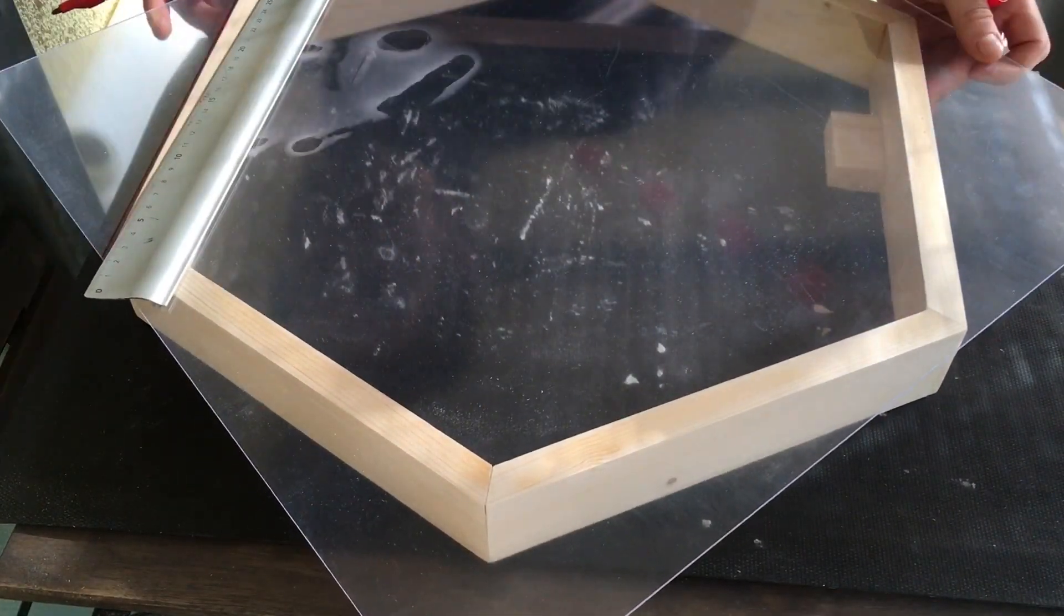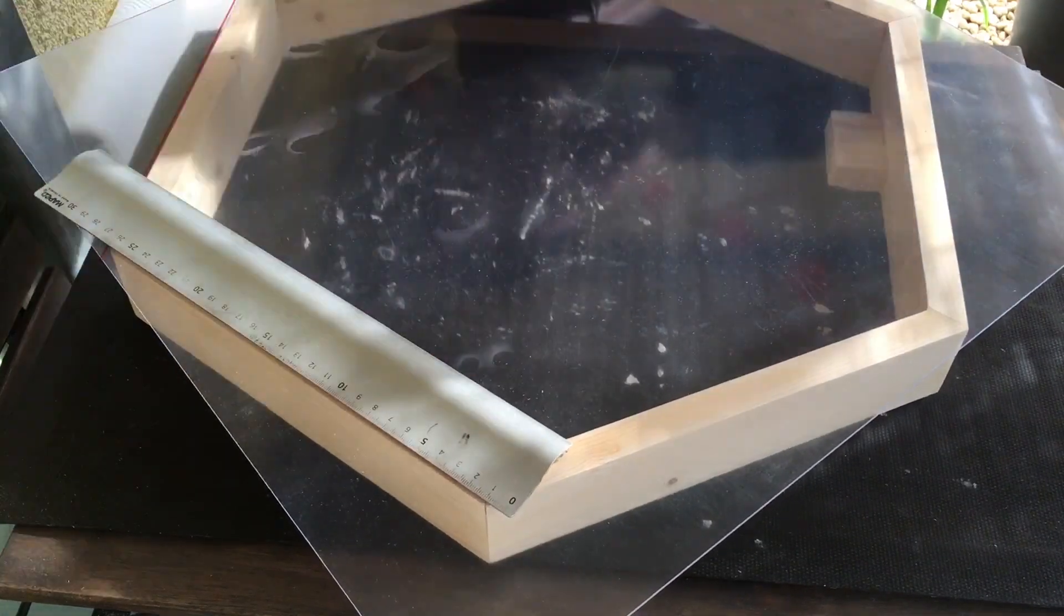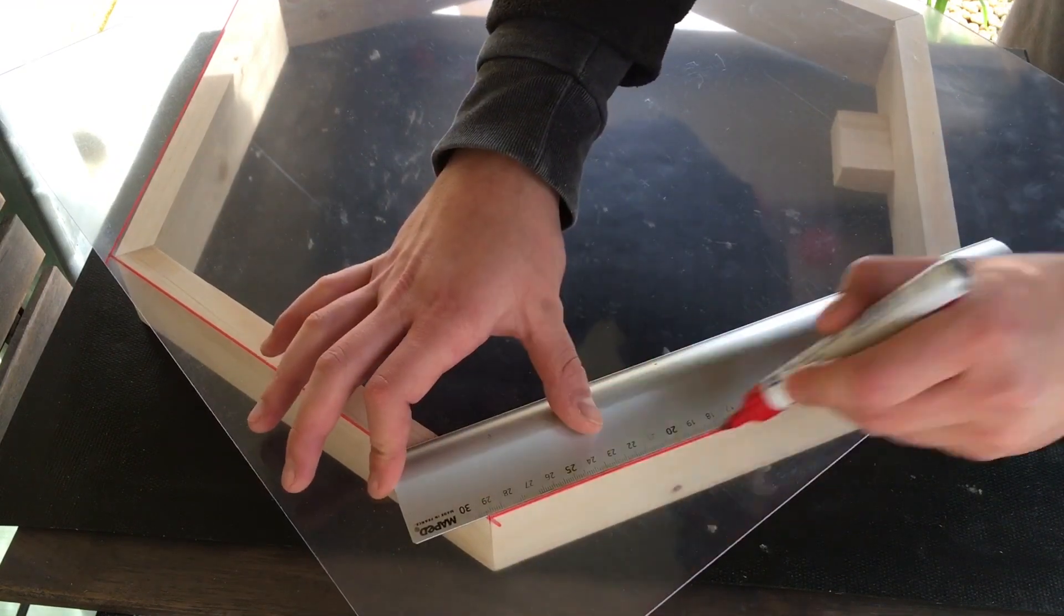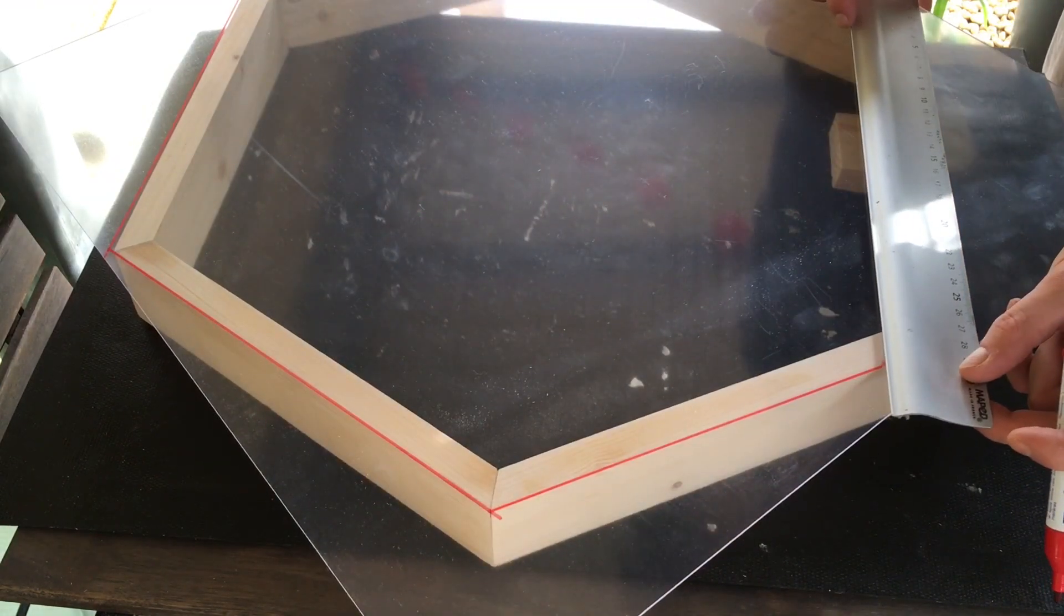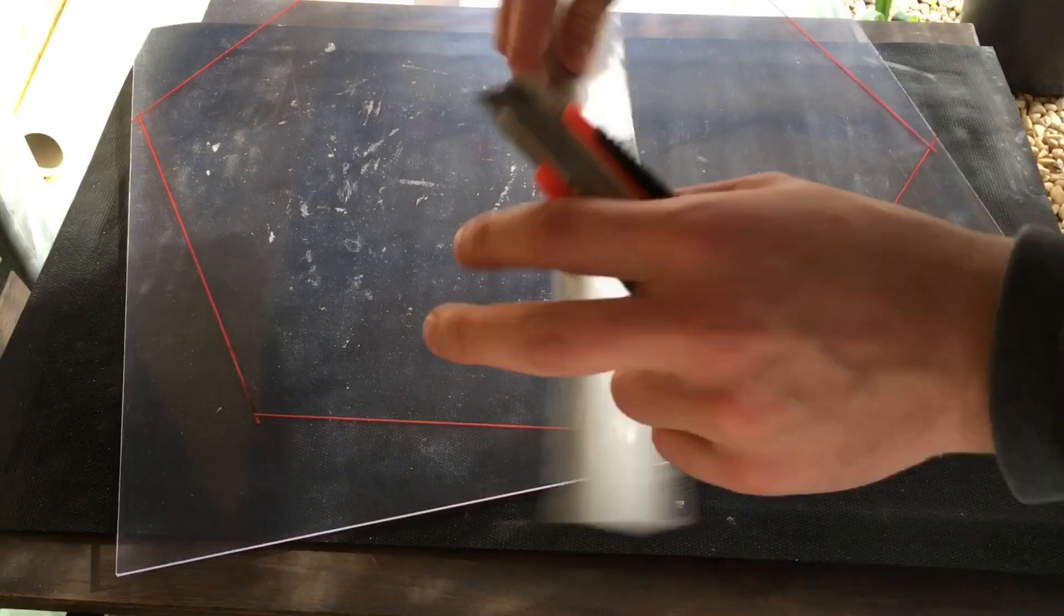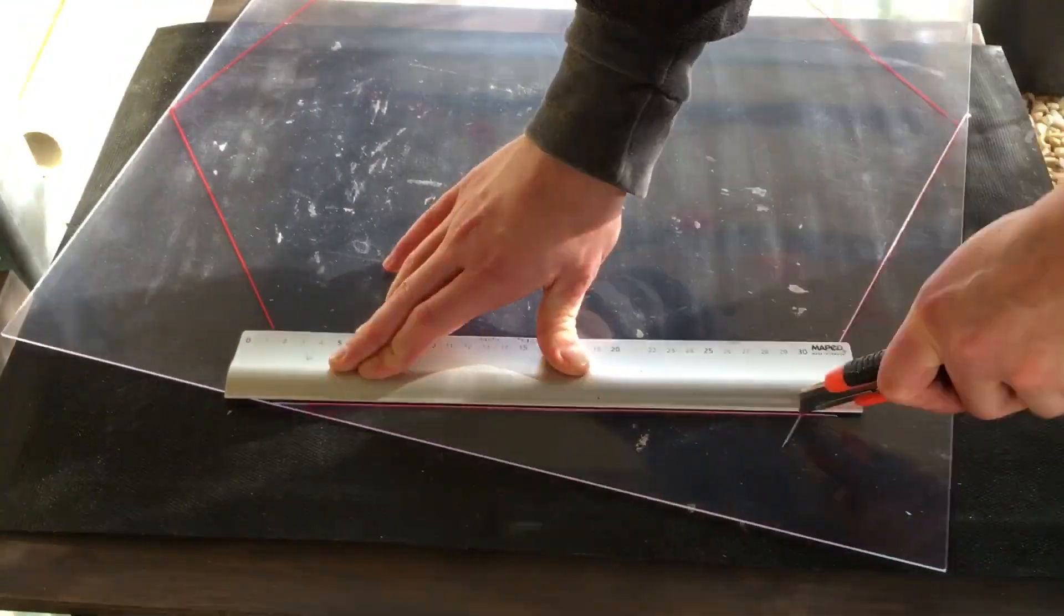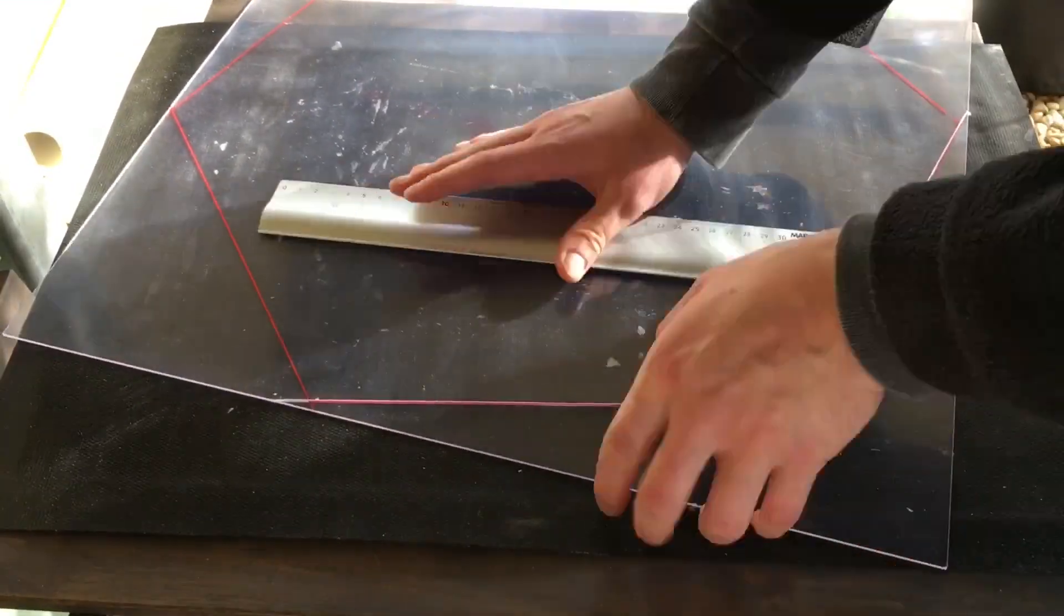Now I'm marking where I need to cut the plexiglass. And then I'm using a very sharp knife. Cut again and again until I can break off the piece.